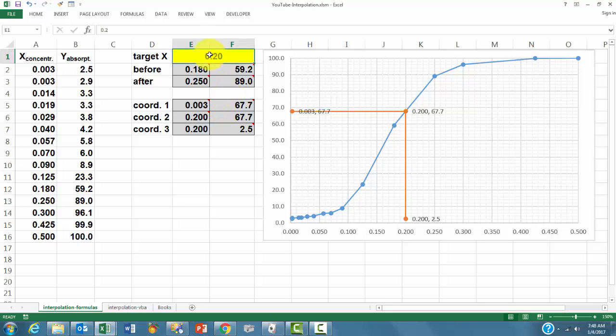Interpolation means that you want to find a certain position, let's say 0.2, between two observation points. So 0.2 is something you did not observe, but you want to find it. We're going to show how to do this with formulas and with VBA.